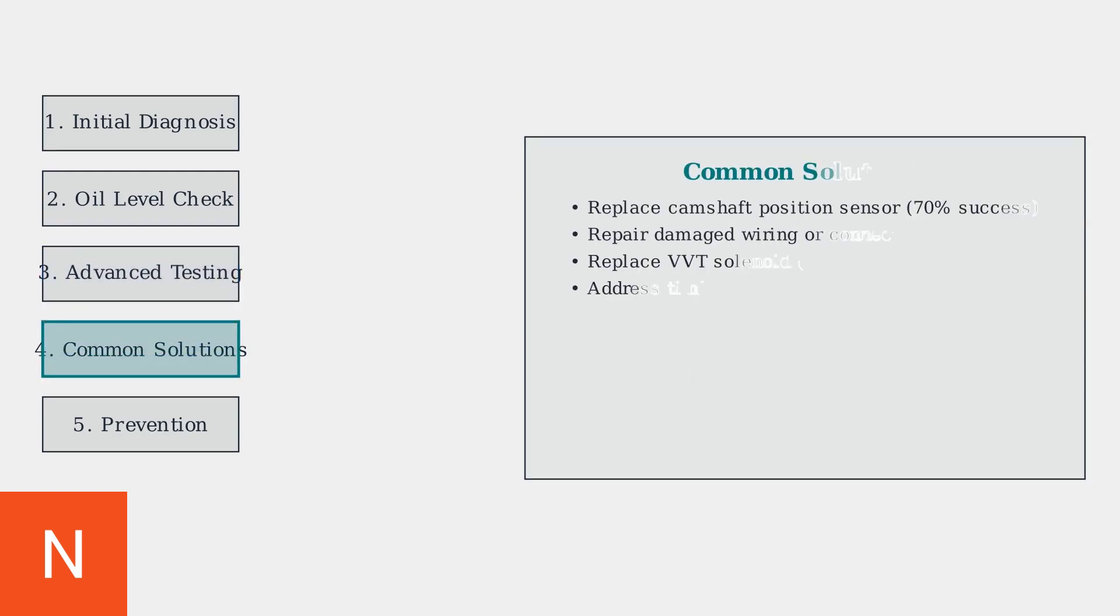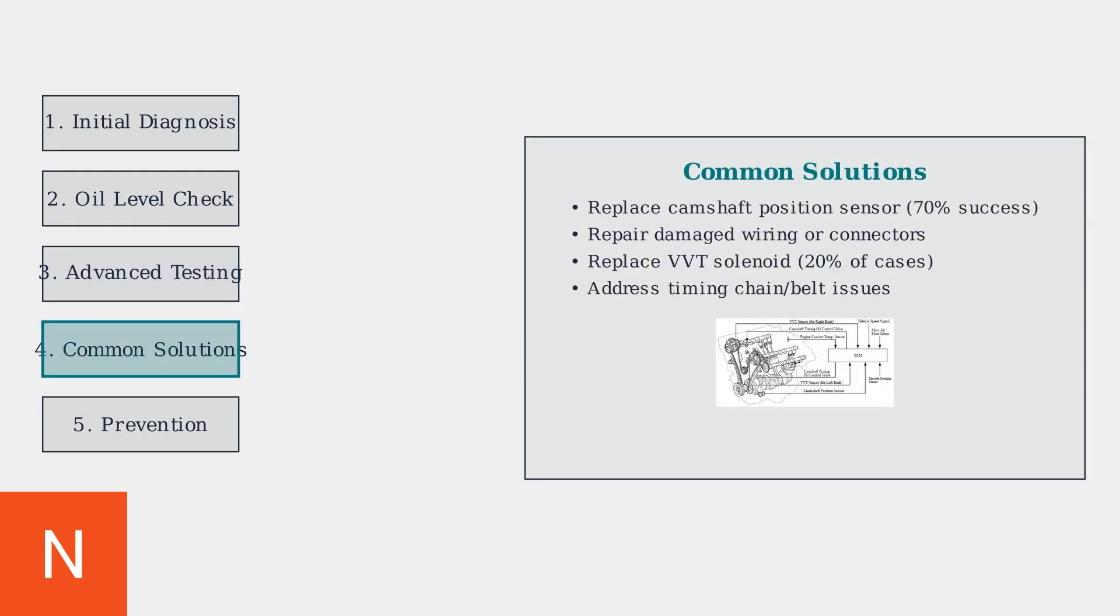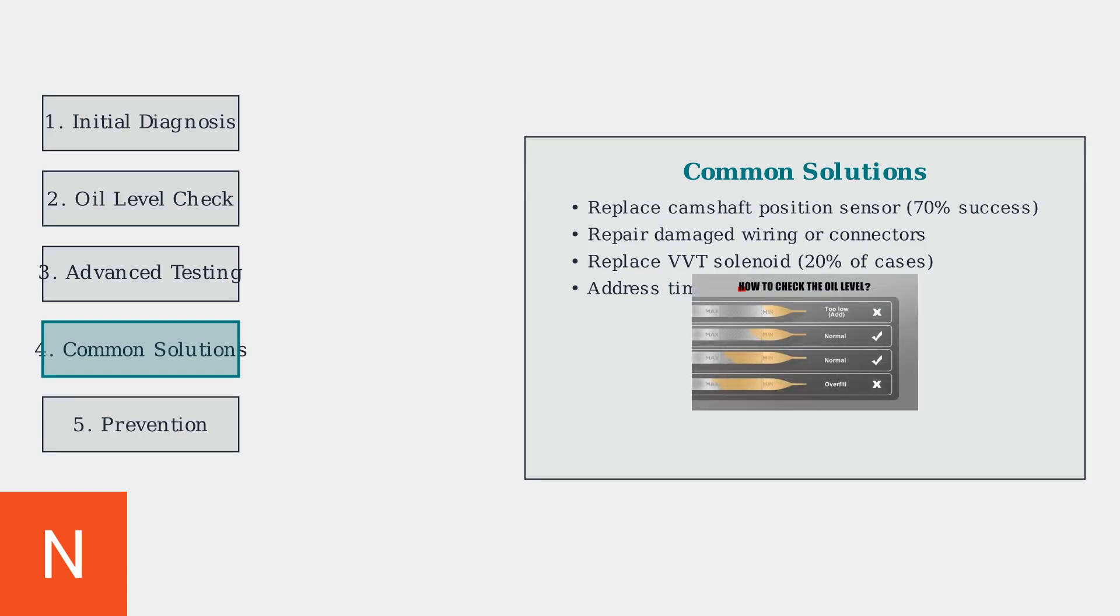Step four covers common solutions. The most frequent fix is replacing the camshaft position sensor, which resolves about 70% of P000B codes. For timing-related issues, inspect the timing belt or chain for wear, stretching, or improper tension. A worn timing belt can cause the camshaft timing to be off.